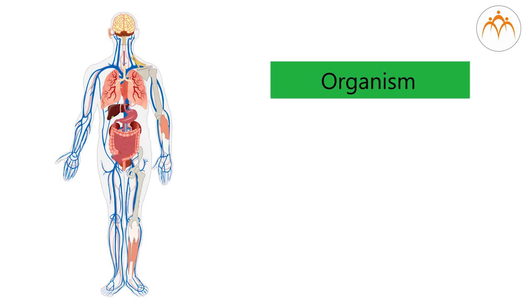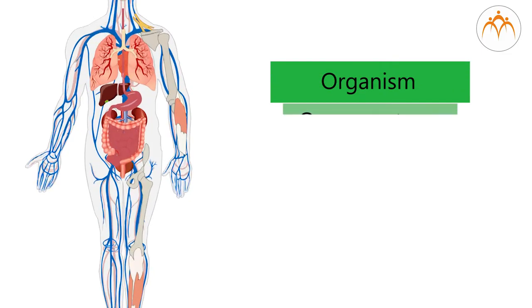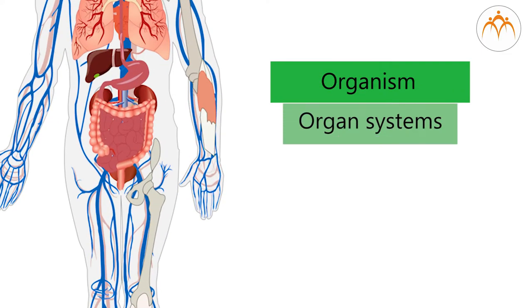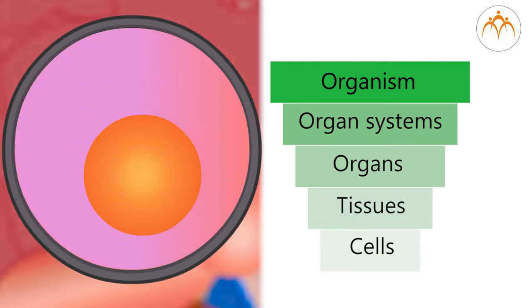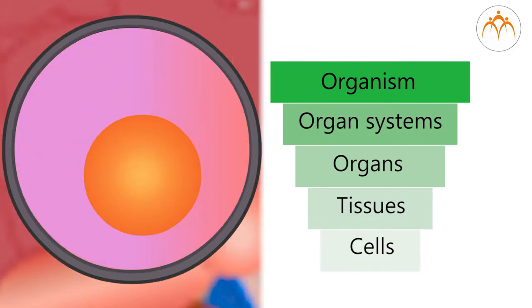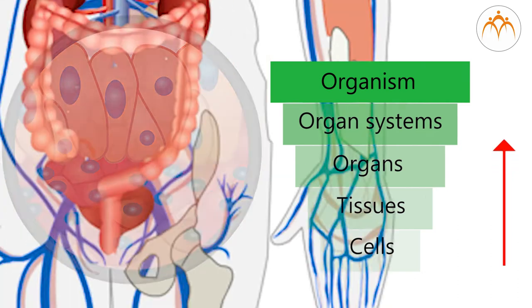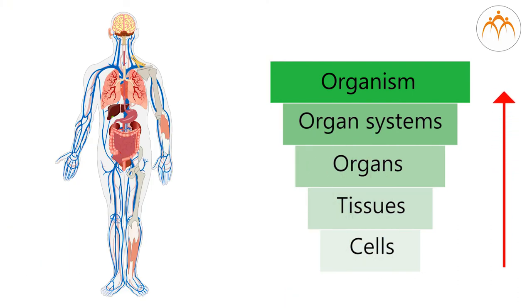Let us have a look at this hierarchy: organism, organ system, organ, tissue, cell. So if we start from the level of cell and proceed towards organism, complexity increases at each level.